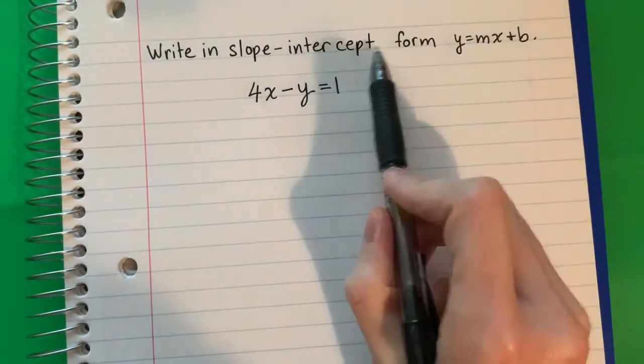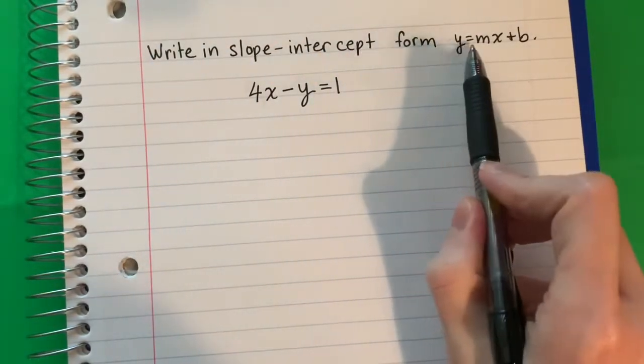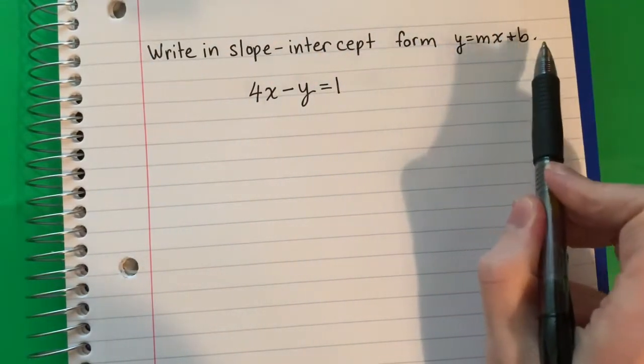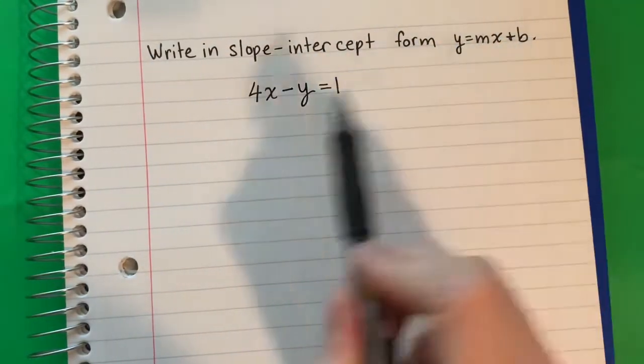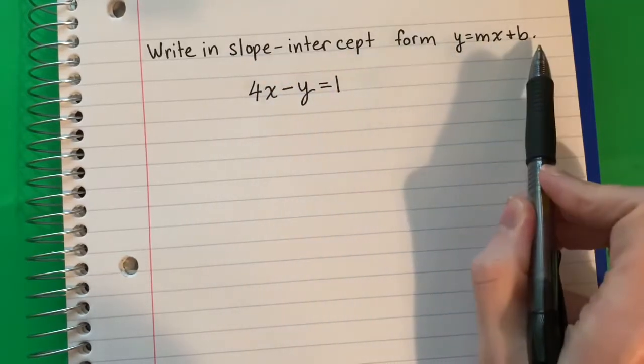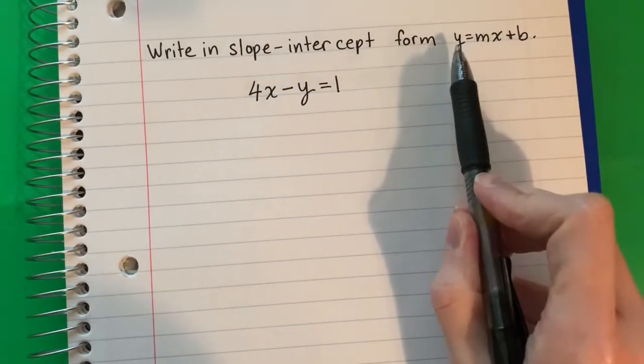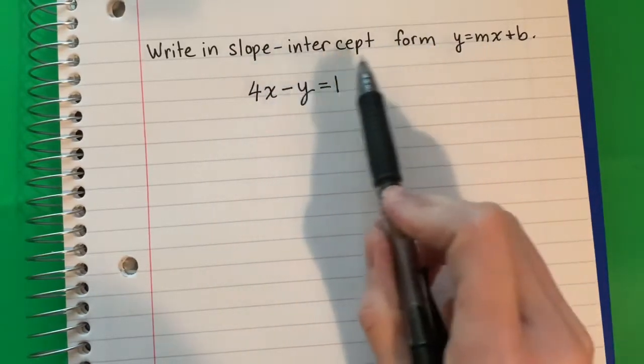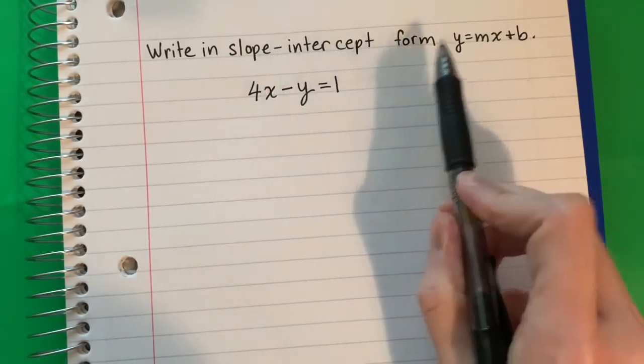Write in slope-intercept form: y equals mx plus b. So I need to change this to this form — slope-intercept form.